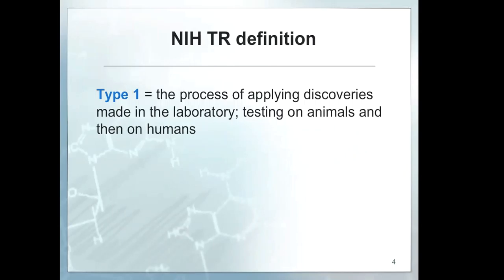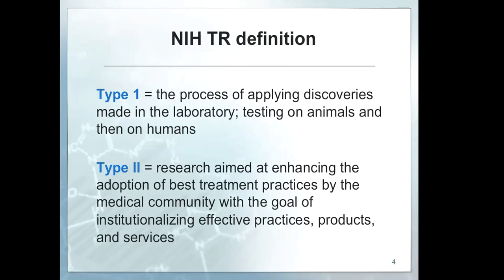The NIH originally started with two types of translational research. Type one involves applying discoveries made in the lab, and type two is enhancing adoption so best practices can be used on humans. This is what translational research started out as. Now we talk about T0 through T4 on the translational research continuum — it was not always four types. T2 has evolved into something much more involved now that we're on the continuum.